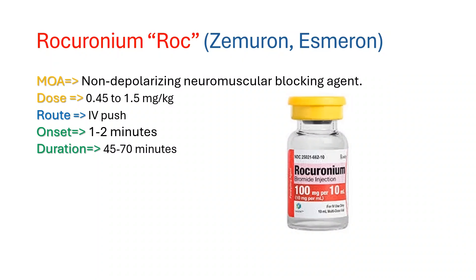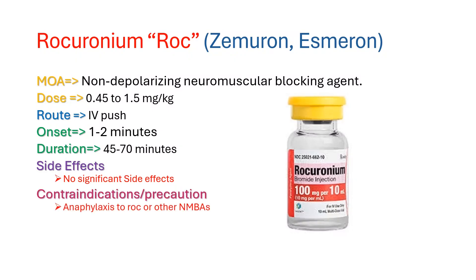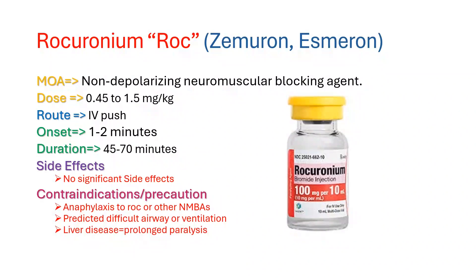In contrast to succinylcholine, rocuronium has no significant side effects and only one contraindication: a history of anaphylaxis to rocuronium or other neuromuscular blocking agents. Therefore, it is often chosen in trauma patients where medical history is unknown or lab values have not resulted. Rocuronium should be used with caution in patients with a predicted difficult airway or ventilation, and in patients with liver disease due to prolonged paralysis.